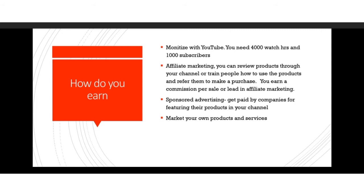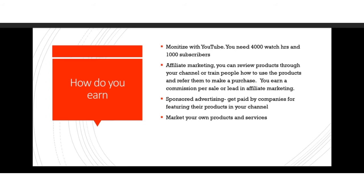The second way to make money from YouTube is affiliate marketing. You can review products through your channel or train people how to use them, then leave an affiliate link in the description. Once someone clicks and makes a purchase, you earn a commission. For example, you could review baby bags — show people how you pack as you get ready for a baby, then refer them to where they can buy the bag.